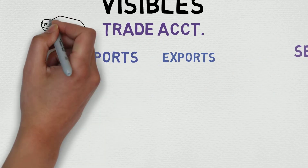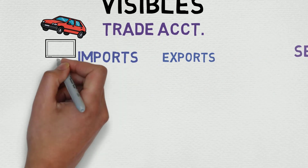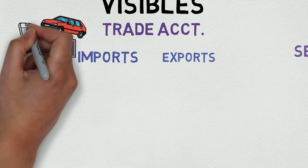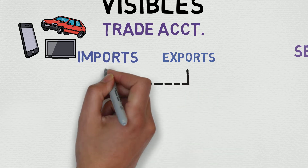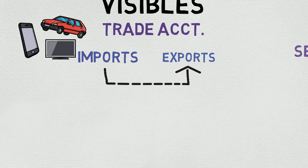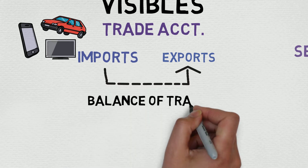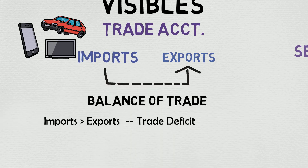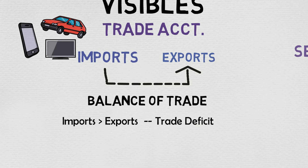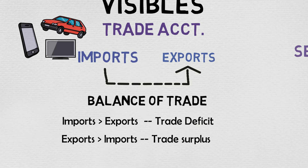The trading account includes all the imports and exports of goods. The difference between imports and exports is called the balance of trade. If imports are greater than exports, it is called a trade deficit, and if exports are greater than imports, we call it a trade surplus.